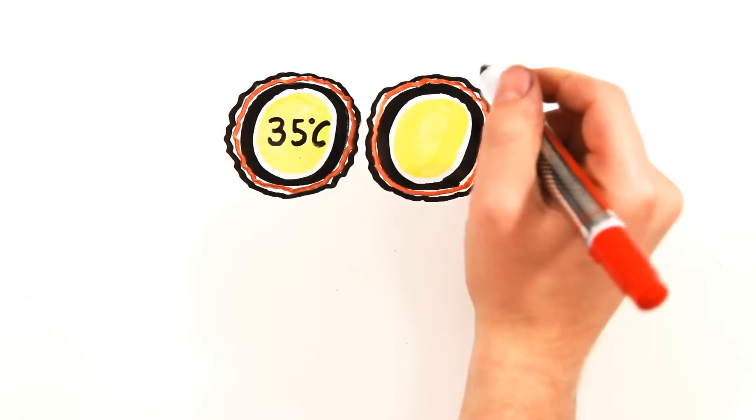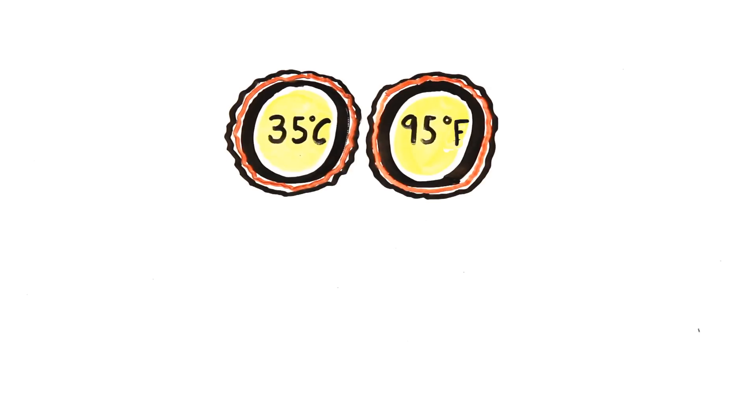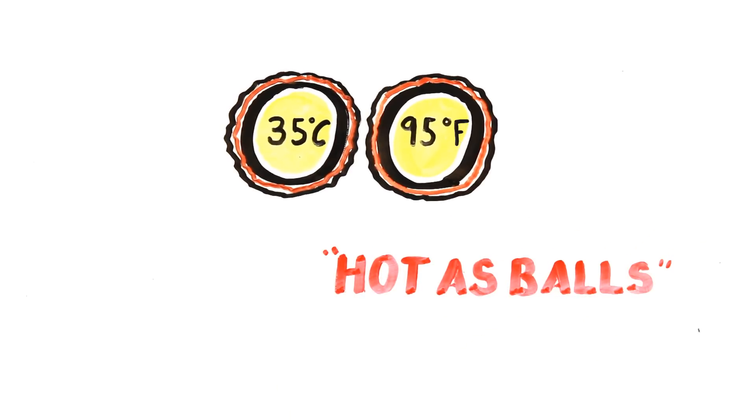Hot outside? The resting temperature of testicles is around 35 degrees Celsius or 95 degrees Fahrenheit, meaning on a hot day, it's literally hot as balls.